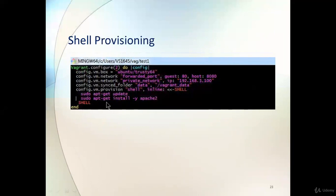So once we run this Vagrantfile, it will: download the Ubuntu machine, do port forwarding from port 80 to 8080 on the base machine, assign an IP to the Ubuntu machine, share the folder between Windows and Linux, and also run the set of commands on the Ubuntu machine after VM creation.